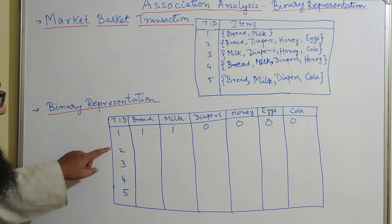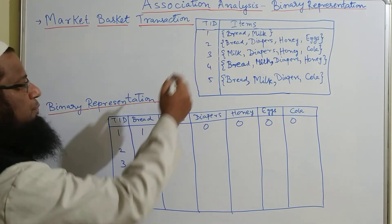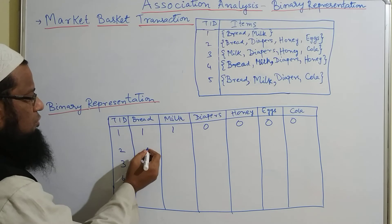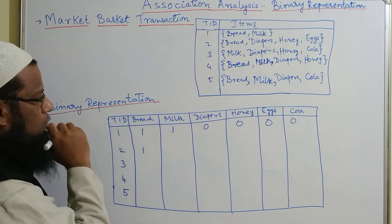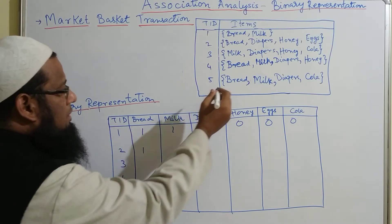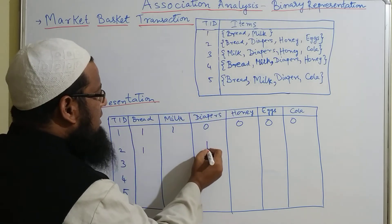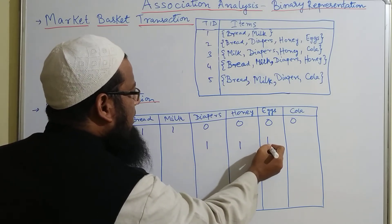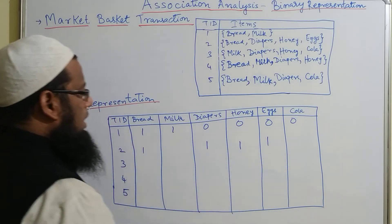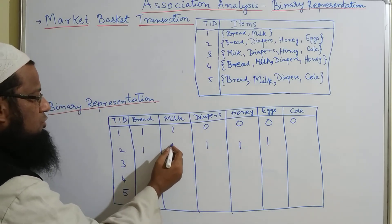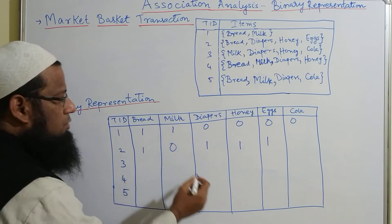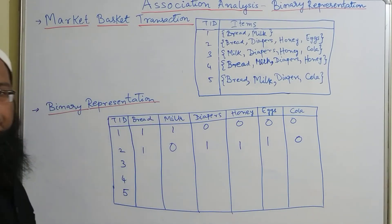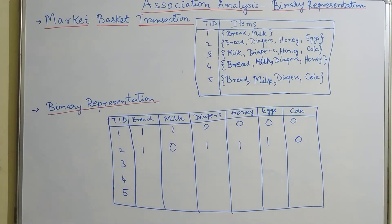Similarly, we are going to see the second transaction ID. Bread is present so in the bread column we will make it 1. Diaper is present, honey is present, and eggs are present. Milk is not there so it will be 0, and cola will also be 0.